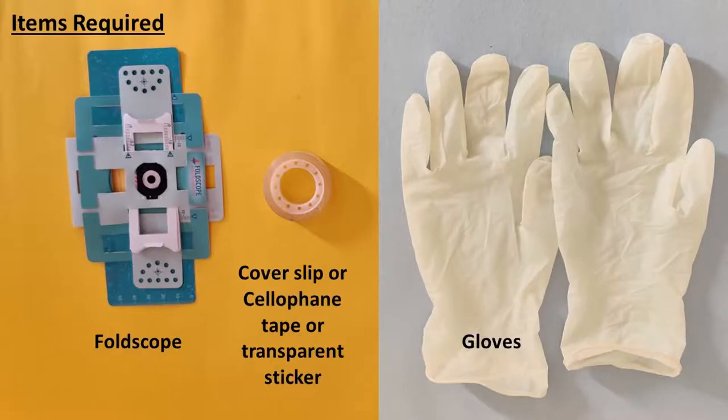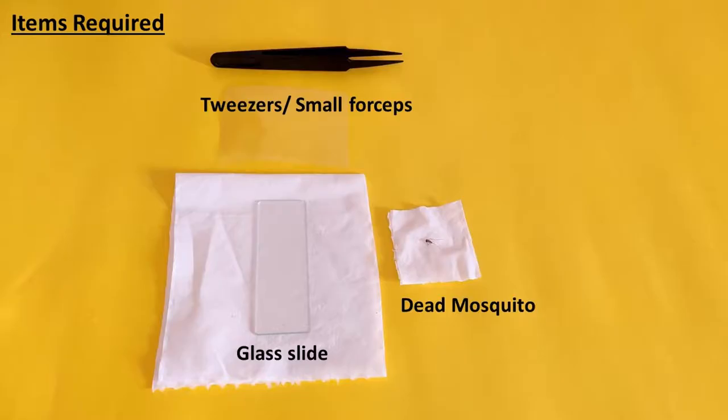For this we will need a foldscope, a cover slip or cello tape or a transparent sticker, gloves, a pair of tweezers or small forceps, glass slide, and a dead mosquito.